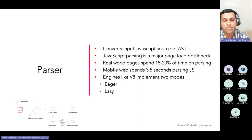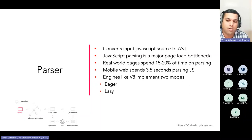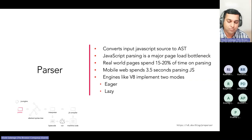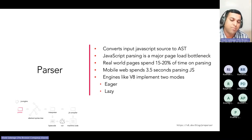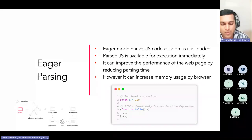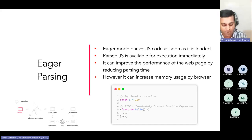Notable JavaScript engines include V8, SpiderMonkey, Microsoft's Chakra, and WebKit's JavaScriptCore. V8-type engines are built as a library that can be embedded into Node.js or a browser. I'll mainly talk about V8 implementations. V8 implements two modes of parsing: eager parsing and lazy parsing. Eager parsing, as the name suggests, parses JavaScript code as soon as it is loaded, making it available for execution immediately. It can improve page performance by reducing parsing time but may increase memory usage.